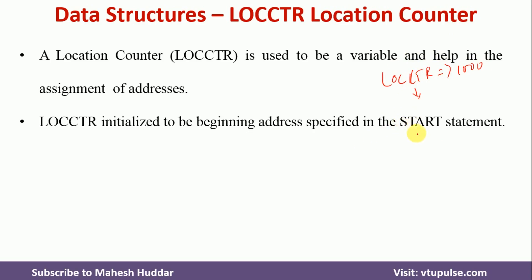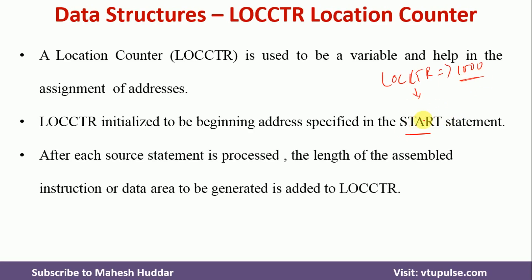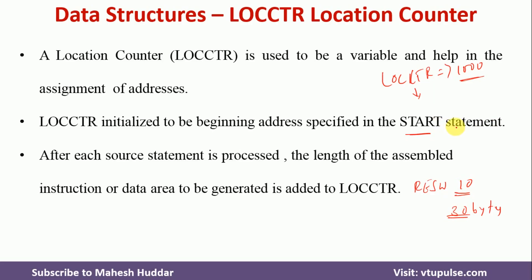LOCCTR is initialized to the starting address. If the instruction format size is 1 byte, we increment by 1 and assign it to the next instruction; if the size is 4 bytes, we increment by 4. We must be careful about the format of each instruction. For example, RESW 10 means reserving 10 words (30 bytes), so we add the hexadecimal equivalent of 30 to the location counter.